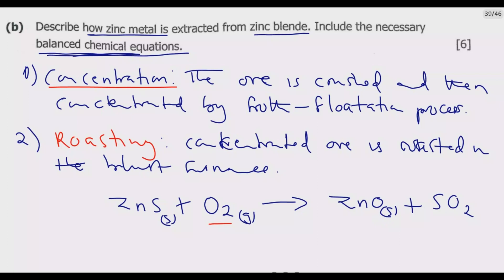To balance, I introduce a 3 coefficient, giving 6 oxygens. I then introduce a 2 here to get 4, and another 2 here to give 6 — balancing the oxygens. For zinc, we have two zinc on this side but one on the other, so I introduce a 2 to give 2ZnS + 3O₂ → 2ZnO + 2SO₂. This is the balanced chemical equation for roasting concentrated zinc ore in the presence of air in the blast furnace.